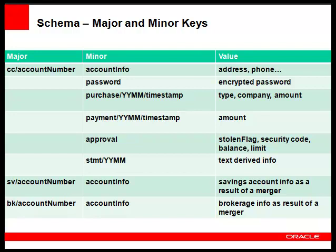We always have no more than 24 months of data available for a given credit card holder. Once the application to create the statement is run, we store the statement with a minor key STMT, followed by a second component representing the year and month — four digits. Whenever a payment is received, a key-value pair is stored with the three-part minor key: payment, followed by year-month and timestamp. With this key design, all of this information for a given credit card holder will be stored on the same shard. Concurrent retrievals will go to any of the replication nodes for that shard.